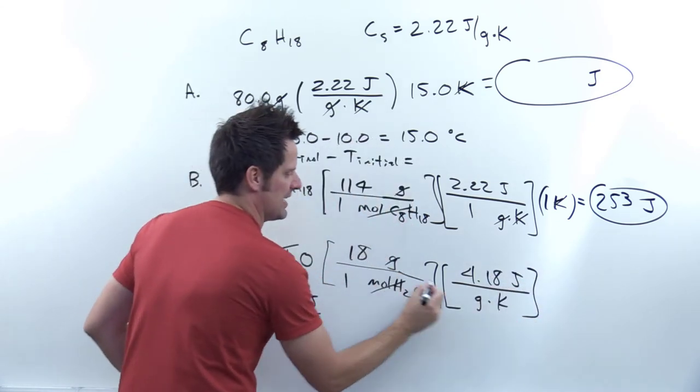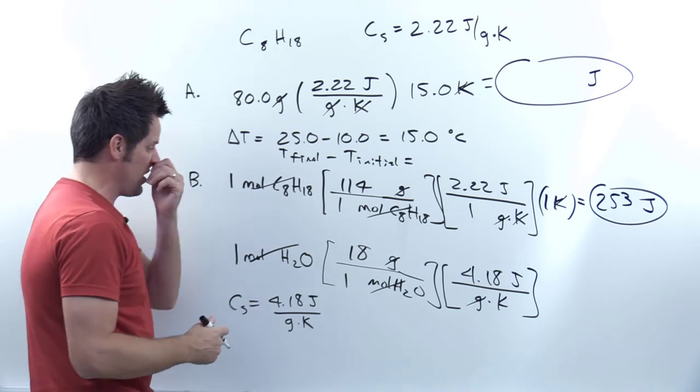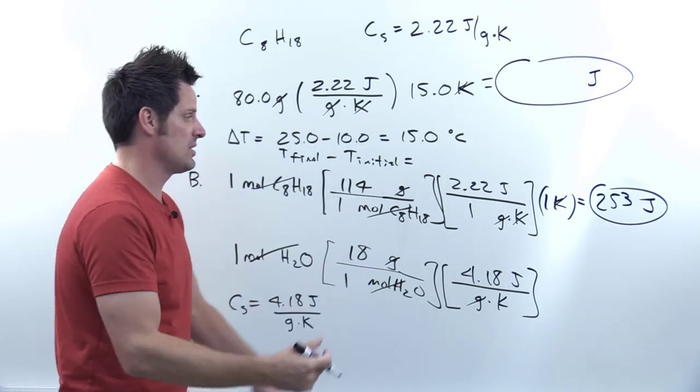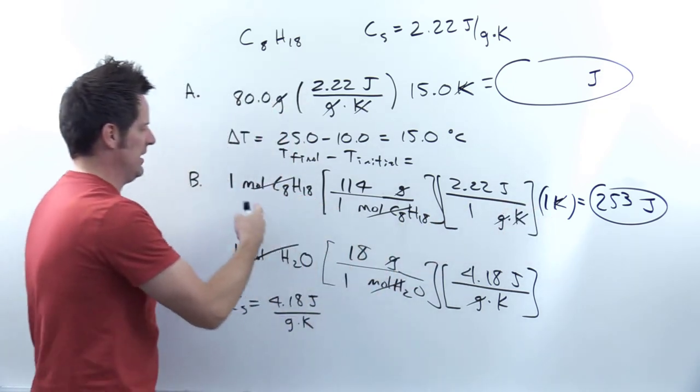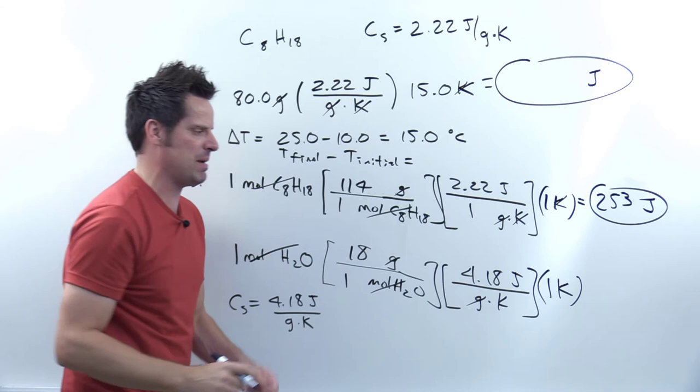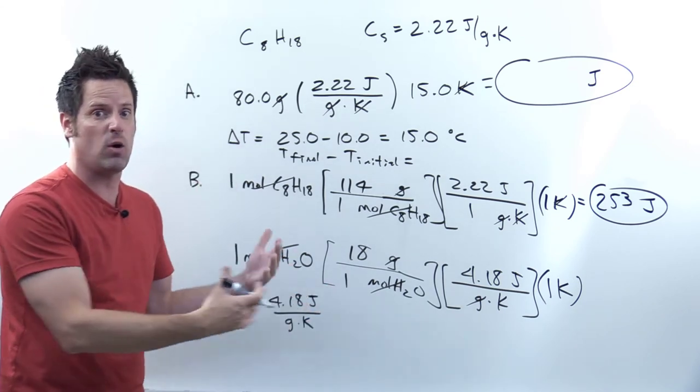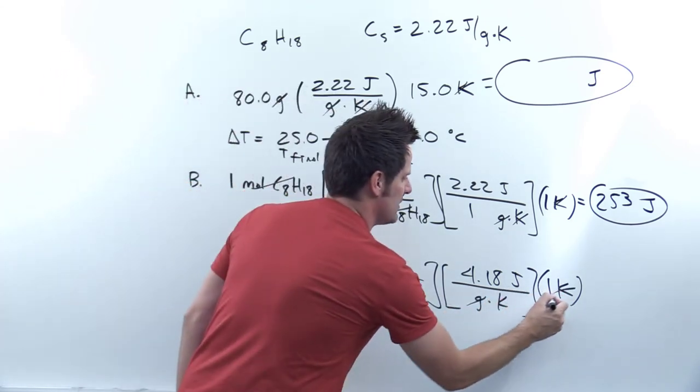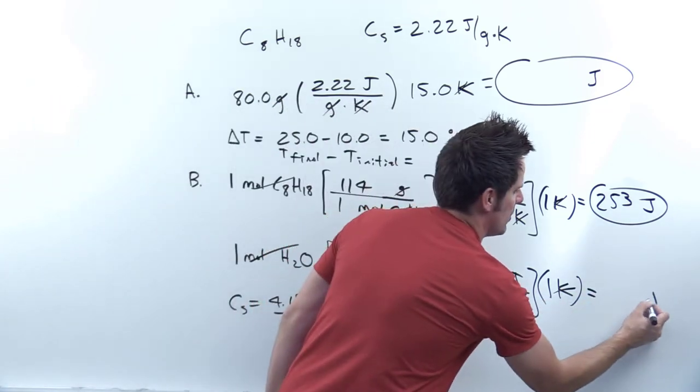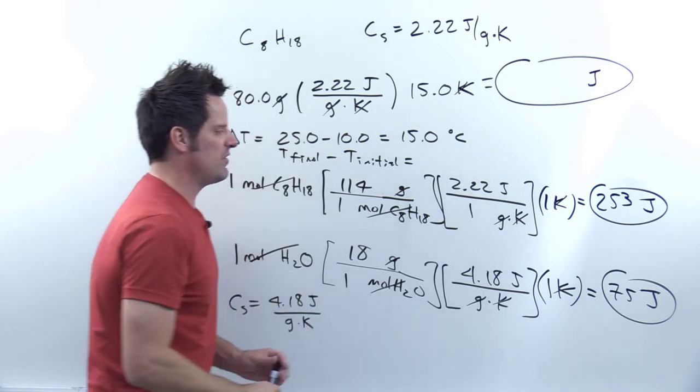So I'm going to put 4.18 joules per grams times kelvin. And you'll notice that my grams cancel each other out. Now I'm not quite there yet, because I need to specify a number of degrees or a number of kelvins. And again, because I picked one kelvin for my octane, I'll pick the same amount for water. My kelvins cancel each other out. I'm left with units of joules. You multiply that through and you end up getting around 75 joules.